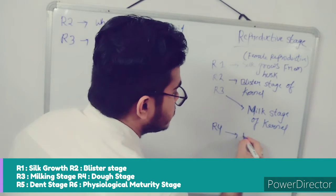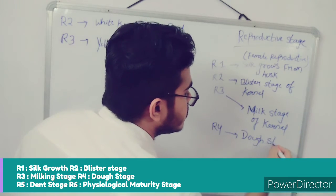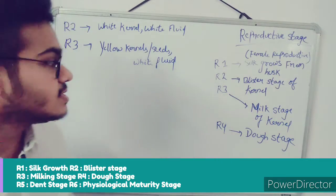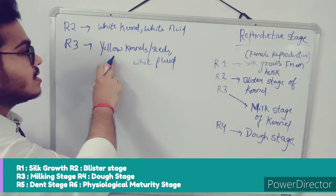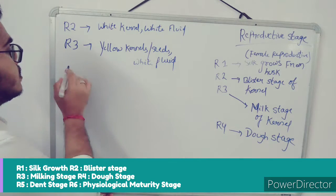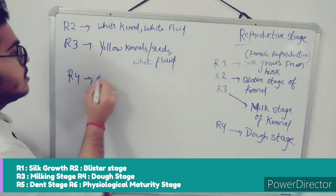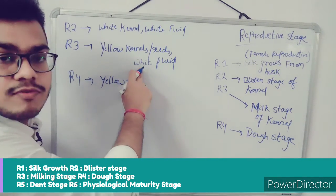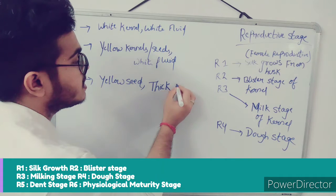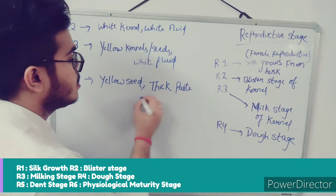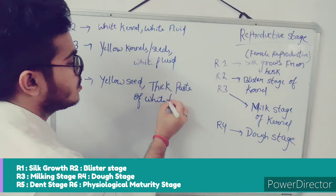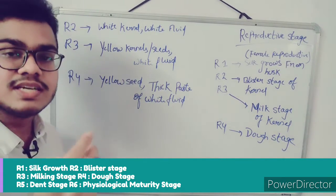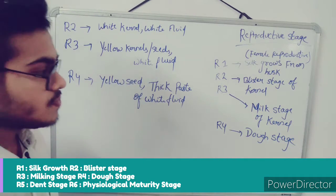R4 is the dough stage of the kernel. In the dough stage, the seeds remain yellow but the white fluid becomes a thick paste of white fluid inside the seeds. So in R4 this liquid becomes thicker inside the kernel.